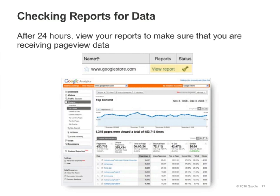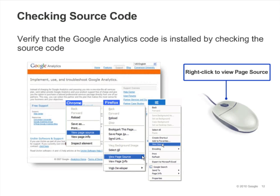Once you've installed your tracking code, it usually takes about 24 hours for data to appear in your reports. The best way to verify that you're receiving data is to simply look at your reports. Go to the top content report in the content section and make sure that you see page view numbers for each of your pages. You can also view your web page's source code to verify that the tracking code is installed. Navigate your browser to any page on your site, right-click within the browser window and select the View Page Source or View Source option.